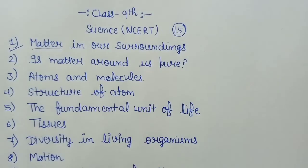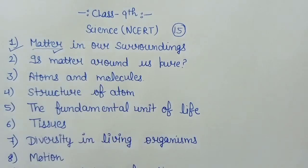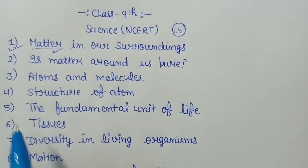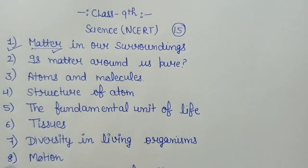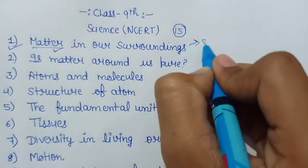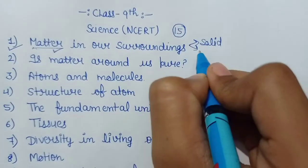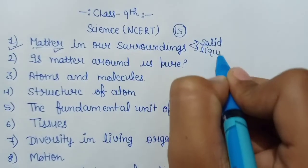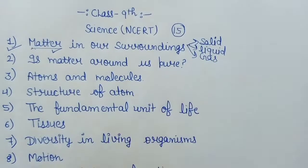First of all, what is matter? तो matter क्या है? हमारी universe में जो भी चीज़ है वो किसी ना किसी material से मिलकर बनी है, उसी material को scientists ने नाम दे दिया — matter. In this chapter we will study how matter can be classified into categories: total three categories — that is solid, liquid and gas. We will read about these and their properties.